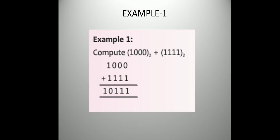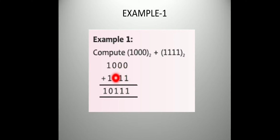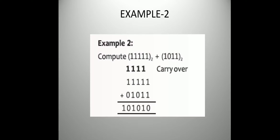Now in example 1, you can see two numbers are given. In the first: 0 plus 1 is 1, 0 plus 1 is 1, 0 plus 1 is 1, and 1 plus 1 is 10. We have followed the table.